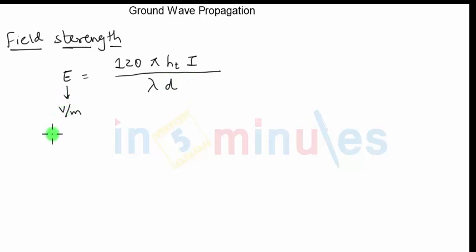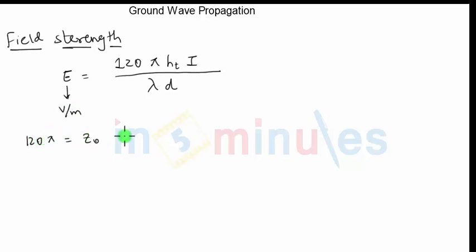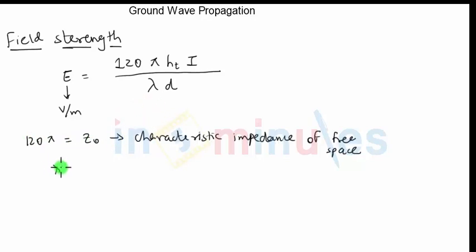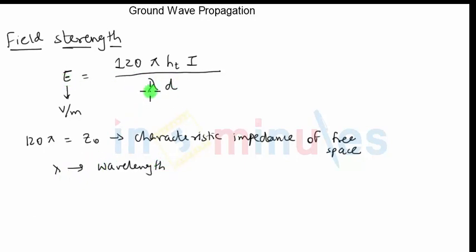Now, what are the other things that we have? 120 pi is obviously a constant, but it is called Z naught — the characteristic impedance of free space. Lambda is the wavelength of the wave, and E is inversely proportional to the wavelength.